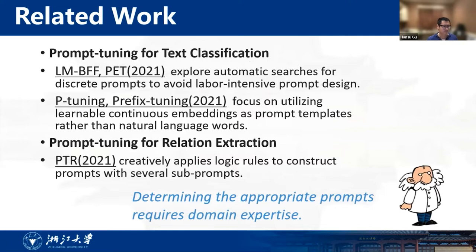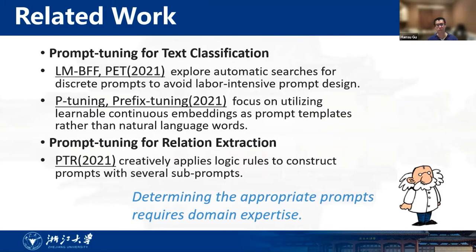Next, I will introduce several related works on prompt tuning. LM-BFF and CAT explore automatic search for discrete prompts to avoid label-intensive prompt design. Then P-TUNING and prefix training focus on utilizing learnable continuous embeddings as prompt tokens rather than natural language words. As for prompt tuning for relation extraction, PTR applies logical rules to construct prompts with several sub-prompts. Determining the appropriate prompts is a major issue for prompt tuning, which requires domain expertise.